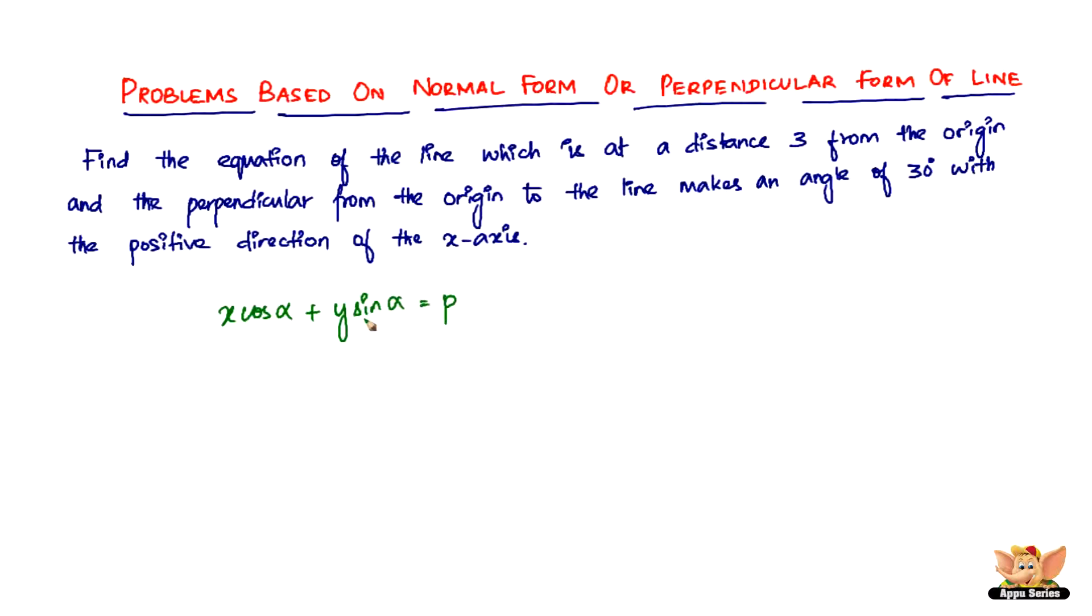So, to get the equation of the line in question here, we just have to find alpha and p, which are both very directly given in the question, because p is 3 and alpha is 30 degrees. So, all that you have to do is just substitute the values of these two in this given equation, and there you have the answer.